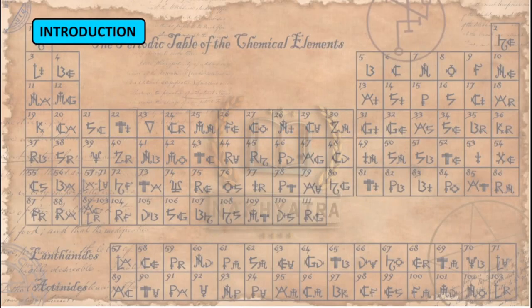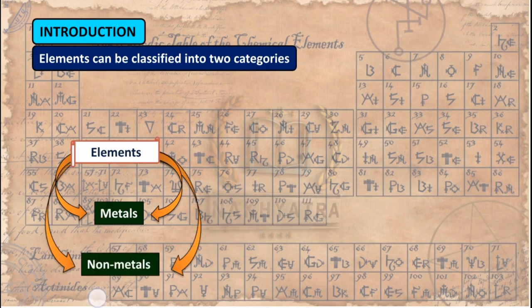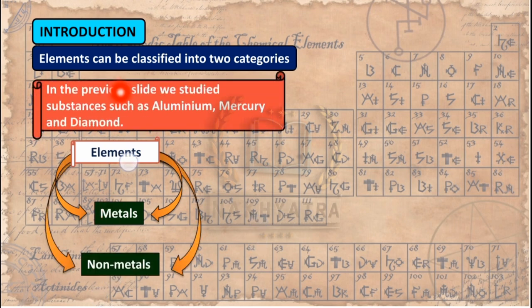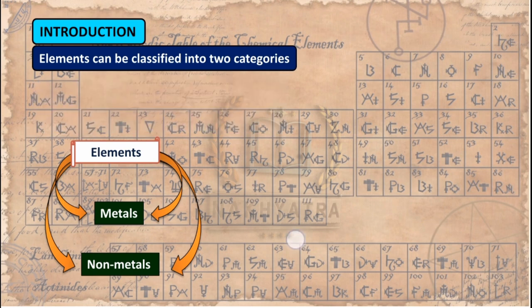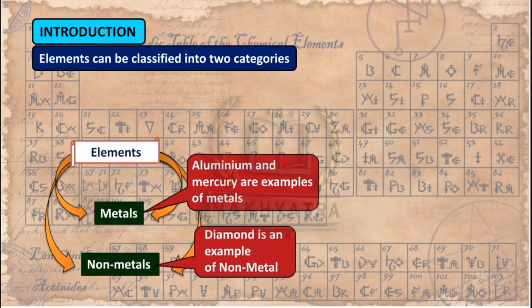Now let us look at the introduction. Elements can be classified into two categories — metals and non-metals. In the previous slide, we studied substances such as aluminium, mercury, and diamond. Aluminium and mercury are examples of metals, whereas diamond is an example of a non-metal.